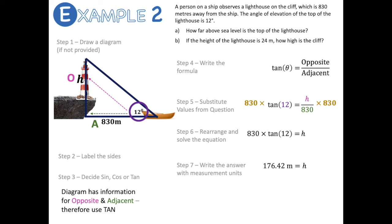For part B, we need to find how high the cliff is. The cliff height is the total height minus the height of the lighthouse. So the cliff height is 176.42 − 24 = 152.42 meters. That's another example of using an angle of elevation with trigonometry to solve a problem.